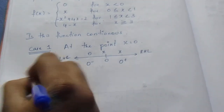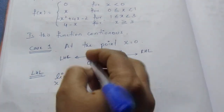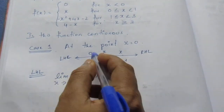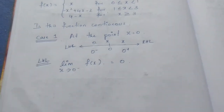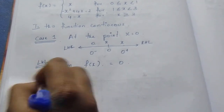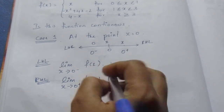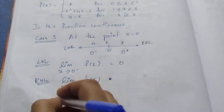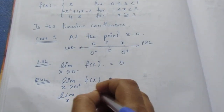First, the left-hand limit: limit x tends to 0 minus of f(x). Since x is less than 0 here, f(x) equals 0, so the left-hand limit equals 0. Next, the right-hand limit: limit x tends to 0 plus of f(x). Since f(x) equals x in this region, we substitute x equals 0 and get 0.